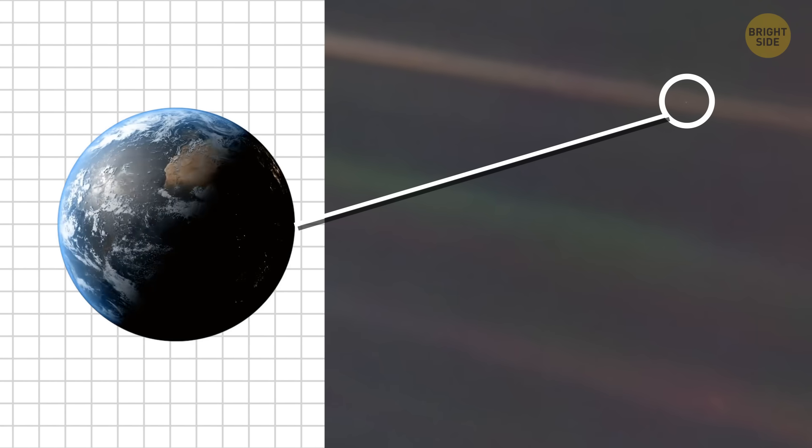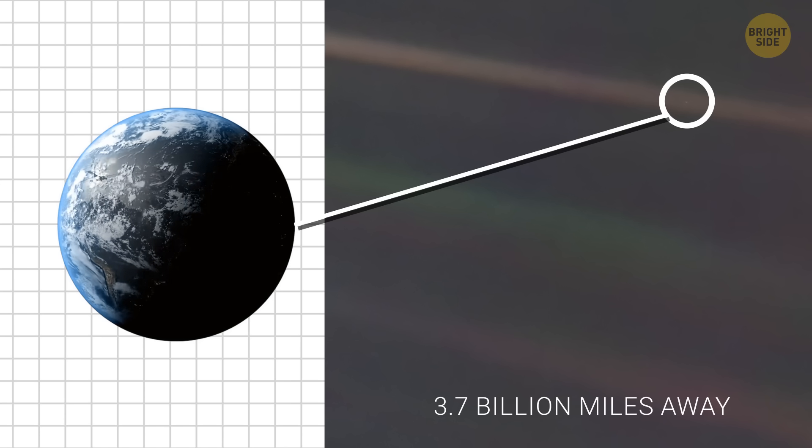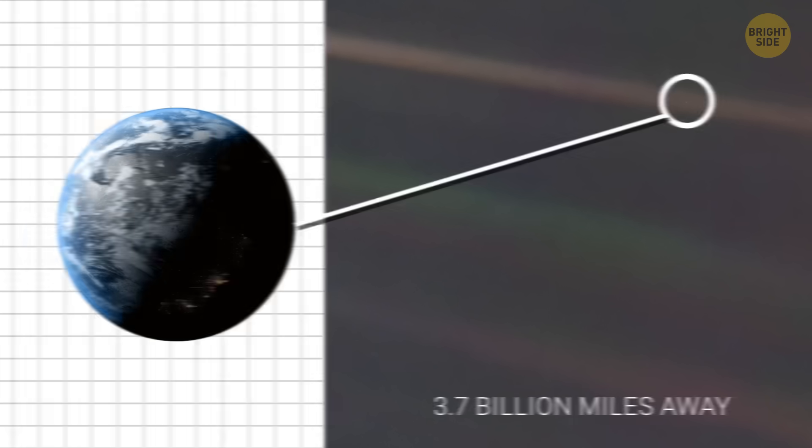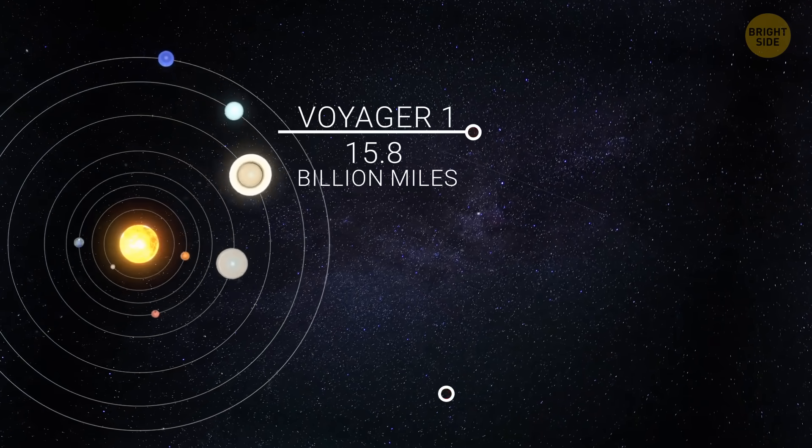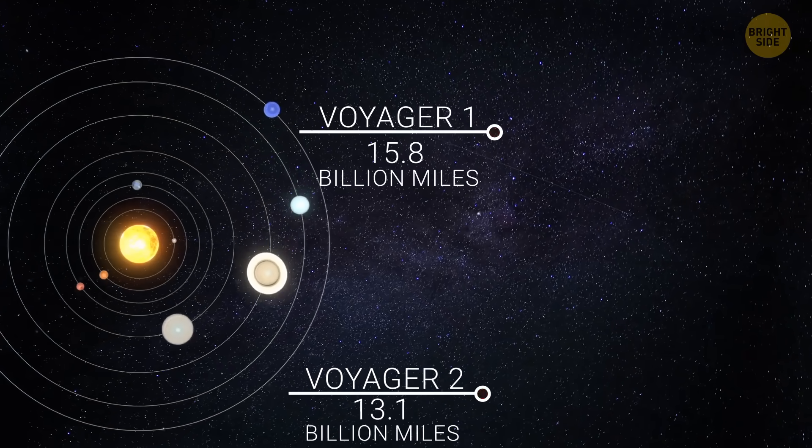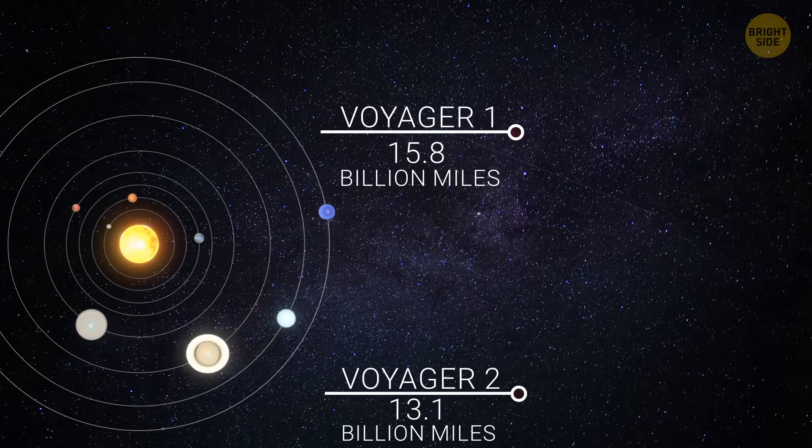By the way, after its planetary visits, Voyager 1 took the famous pale blue dot photo of Earth from about 3.7 billion miles away. Today, Voyager 1 is about 15.8 billion miles from Earth, and Voyager 2 is about 13.1 billion miles away.